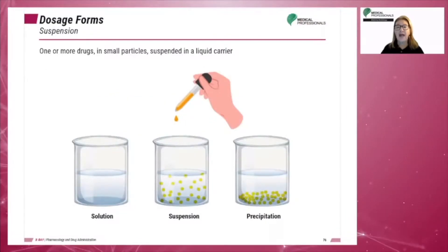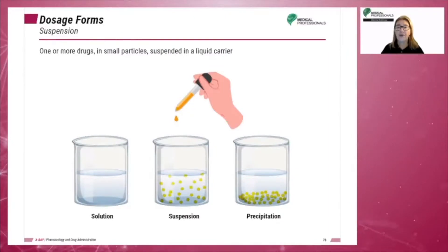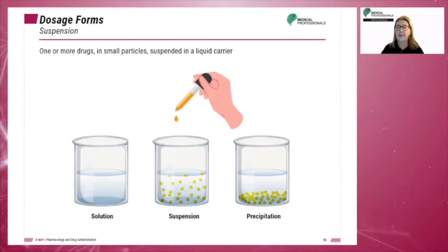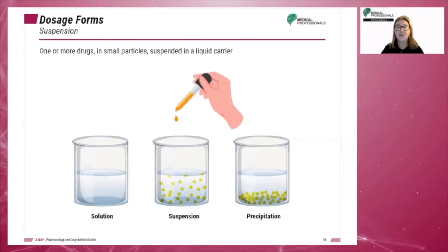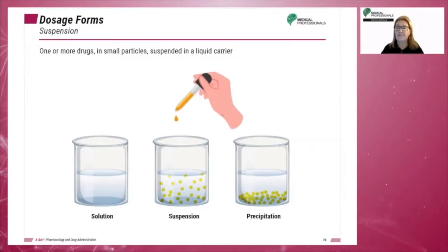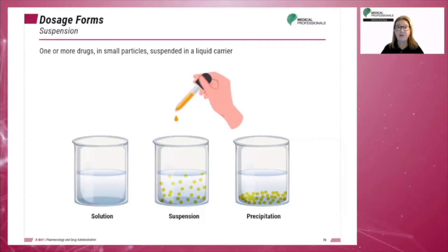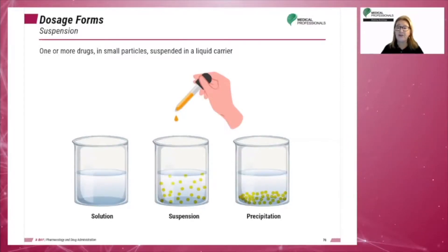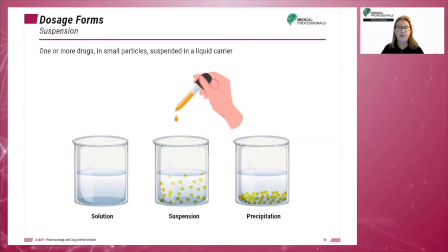Suspensions have one or more drugs in small particles that are suspended in a liquid carrier. Most suspensions are administered orally and should be shaken thoroughly right before administration. Barium sulfate, used as a contrast in barium enemas, is an example of a suspension. Suspensions cannot be given parenterally.